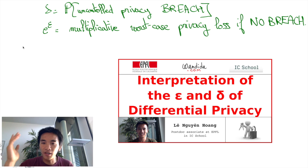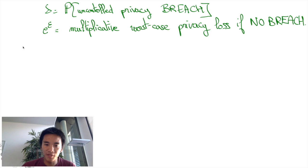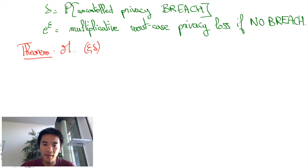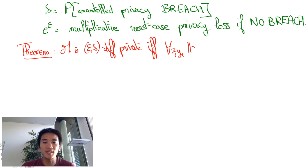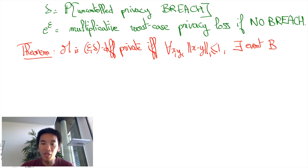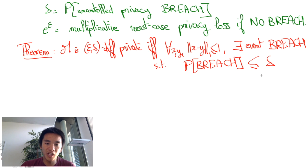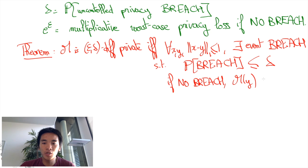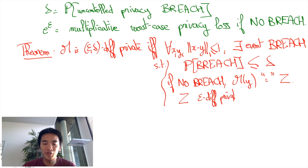but it should not exceed something like 10. What I've just described informally actually relies on a formal theorem, which asserts that a mechanism is epsilon-delta differentially private if and only if, for any two neighbor databases x and y of L1 distance 1 from each other, there is a breach event of probability at most delta such that, when there is no breach, m of y is indistinguishable from a randomized response z, which is itself epsilon-differentially private with respect to m of x.